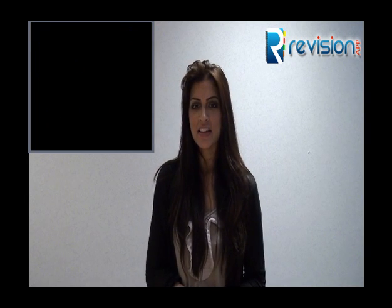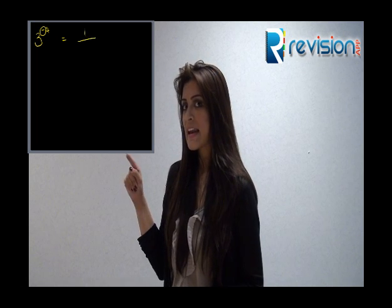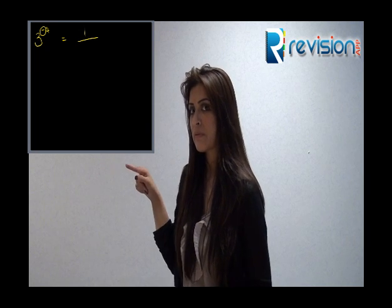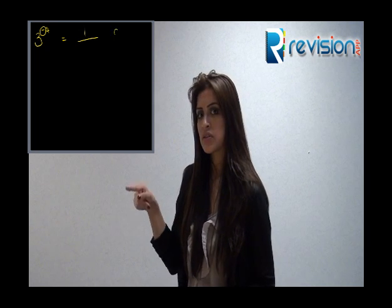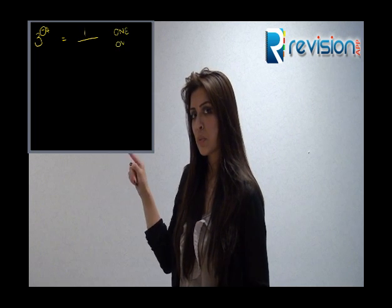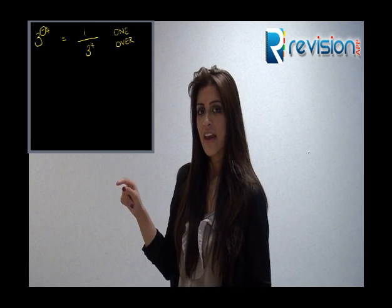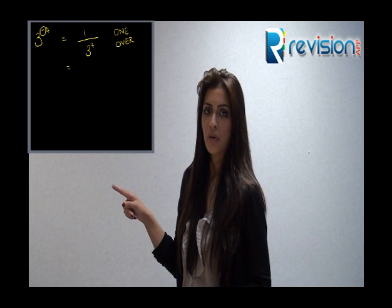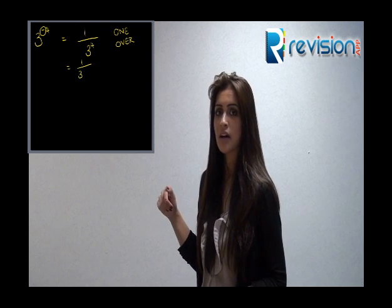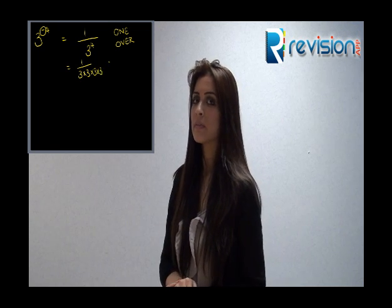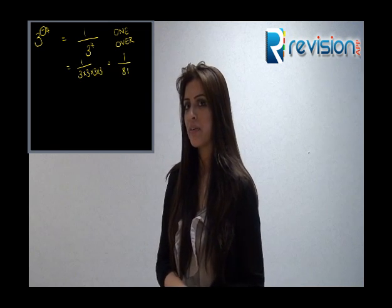Let's move on to negative indices. Look at this example: 3 to the power of minus 4. When you see a negative index, the first thing you must remember is that a negative index means 1 over. So 3 to the power of minus 4 becomes 1 over 3 to the power of 4. You can then simplify 3 to the power of 4 by doing 3 times 3 times 3 times 3, which gives 81. Our answer is 1 over 81.